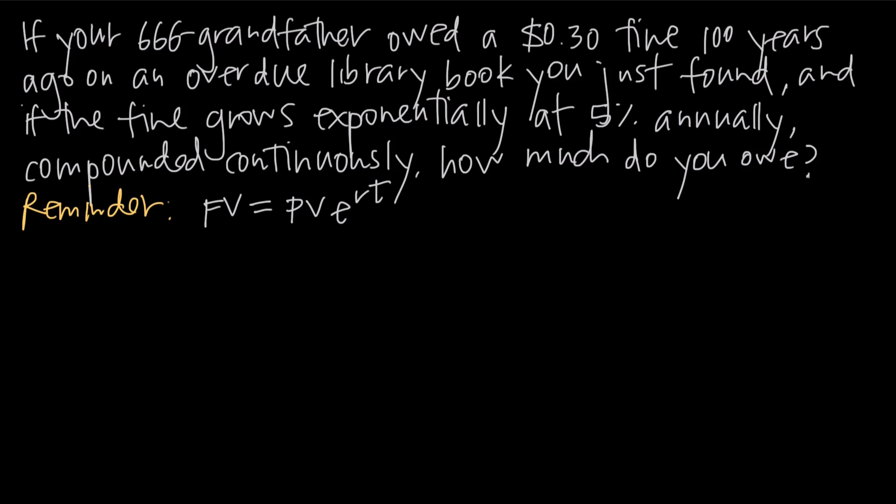So in this particular problem, we've been told that your great-great-great-grandfather owed a 30-cent fine 100 years ago on an overdue library book, and you just found it. We've been asked to figure out how much is owed today if the fine grows exponentially at 5% annual interest rate and the interest is compounded continuously. So the key here is this compounded continuously part of the question.